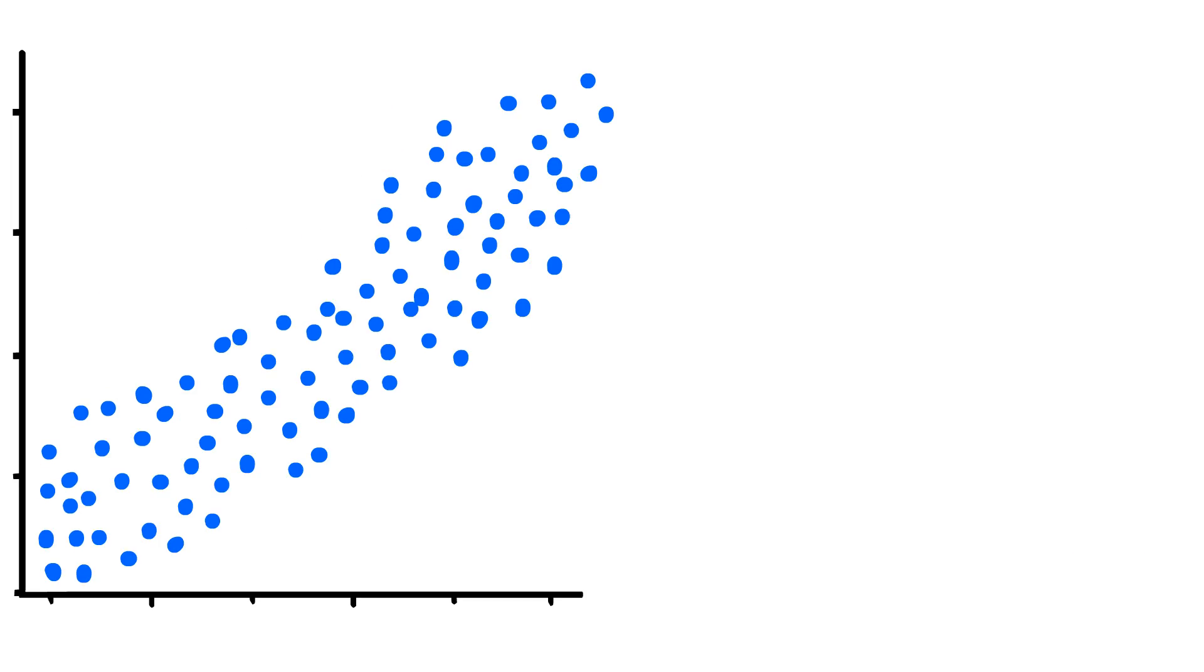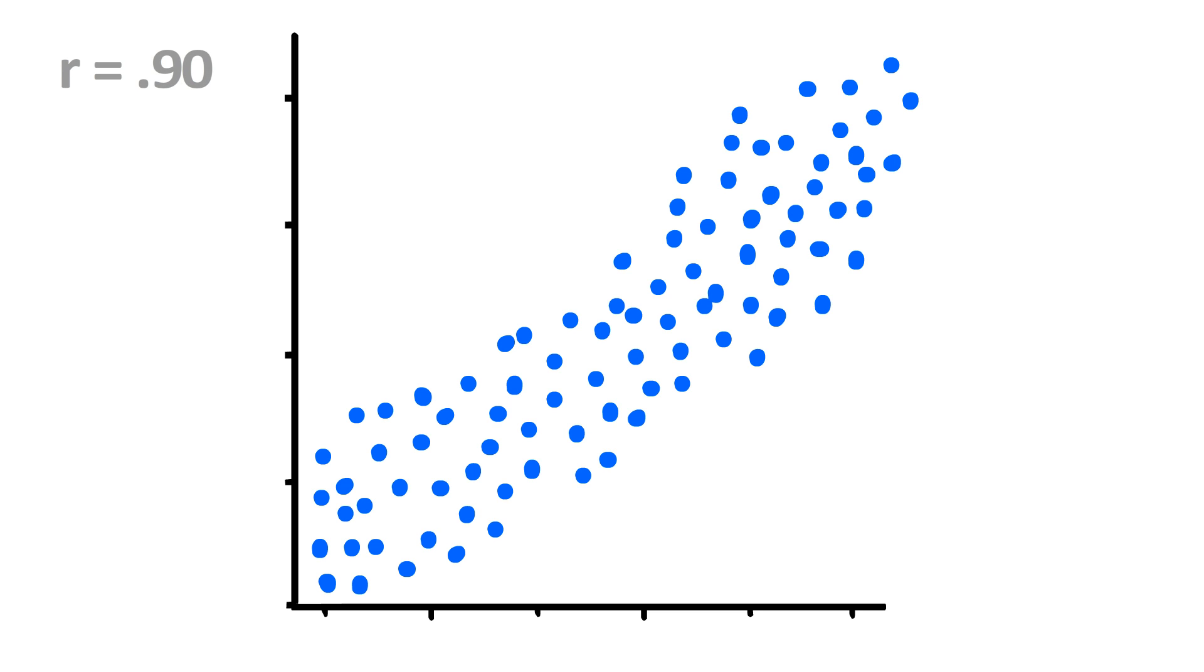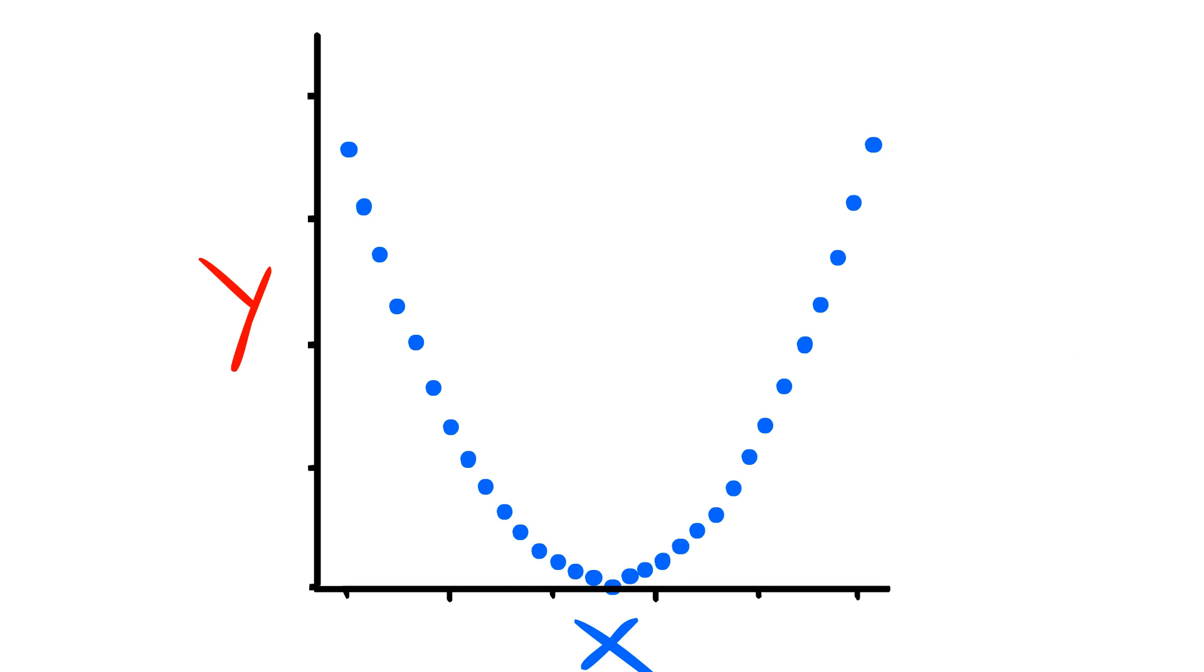Keep in mind, though, a correlation only helps to describe a linear relationship between two variables, that is, a positive or negative relationship, that continues in a straight line. For example, even though you can see here, x and y have a clearly observable relationship, the correlation for these two variables is actually zero, because a correlation is assessing the strength of a linear relationship.